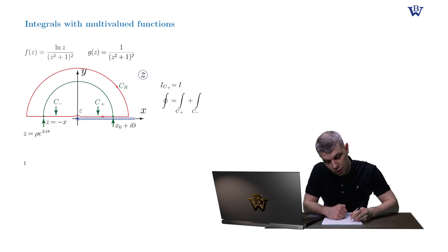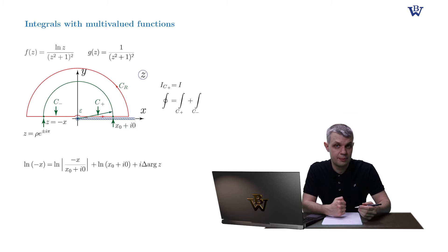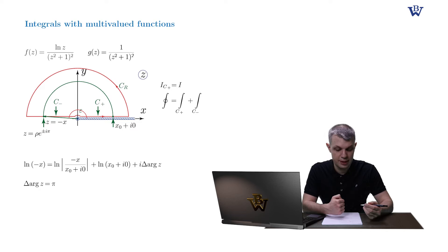So log of minus x is equal to the log of the modulus of the ratio of minus x divided by x0 plus i0, plus log of x0 plus i0, plus i delta argument of z. The z arrow obviously rotates by pi in the counterclockwise direction. So delta argument of z is pi. The log of the modulus of x0 plus i0 and the log just of x0 plus i0 cancel out. So what we are left with is log of minus x equals log of modulus of x plus i pi.